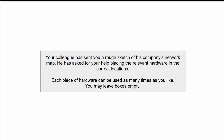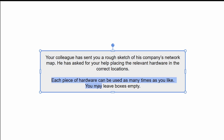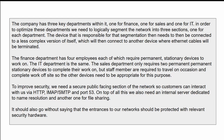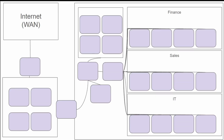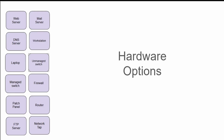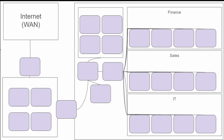This A+ 1201 performance-based question starts with text saying your colleague has sent you a rough sketch of his company's network map and has asked for your help placing the relevant hardware in the correct locations. Each piece of hardware can be used as many times as you like, and you may leave boxes empty. We know we are going to get a description and a sketch, then a hardware options slide. We'll read the written description, look at the physical network layout, and select the correct hardware to slot in the correct spot.